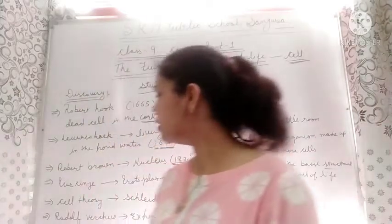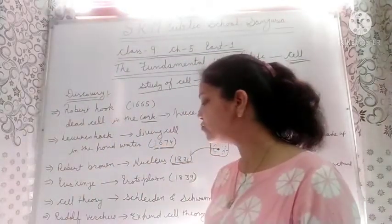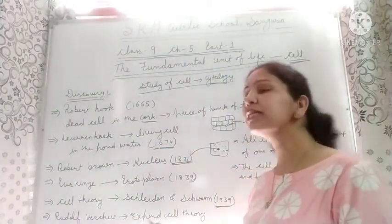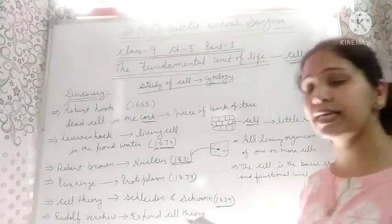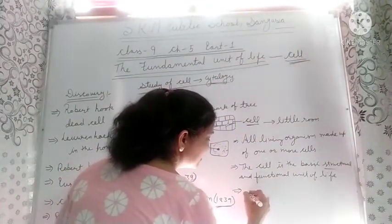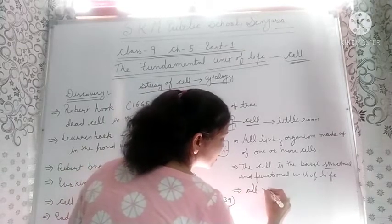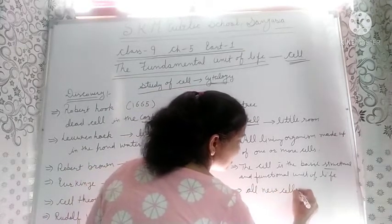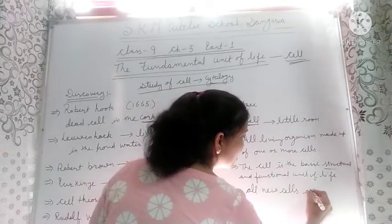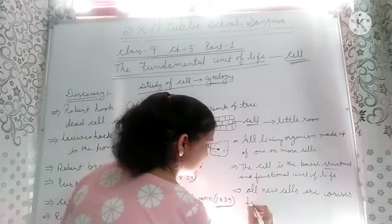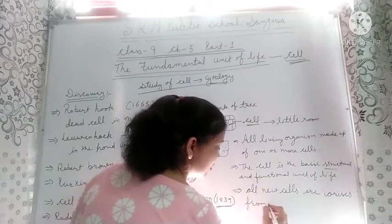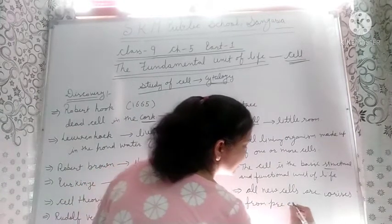After that, Rudolf Virchow expanded the cell theory and stated that all new cells arise from pre-existing cells.